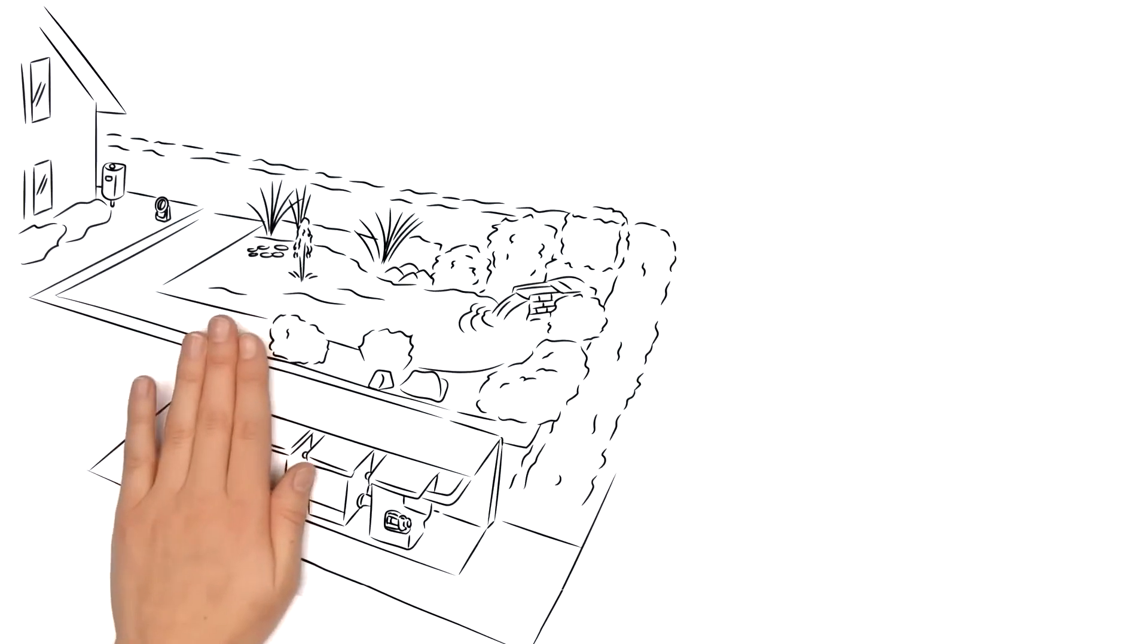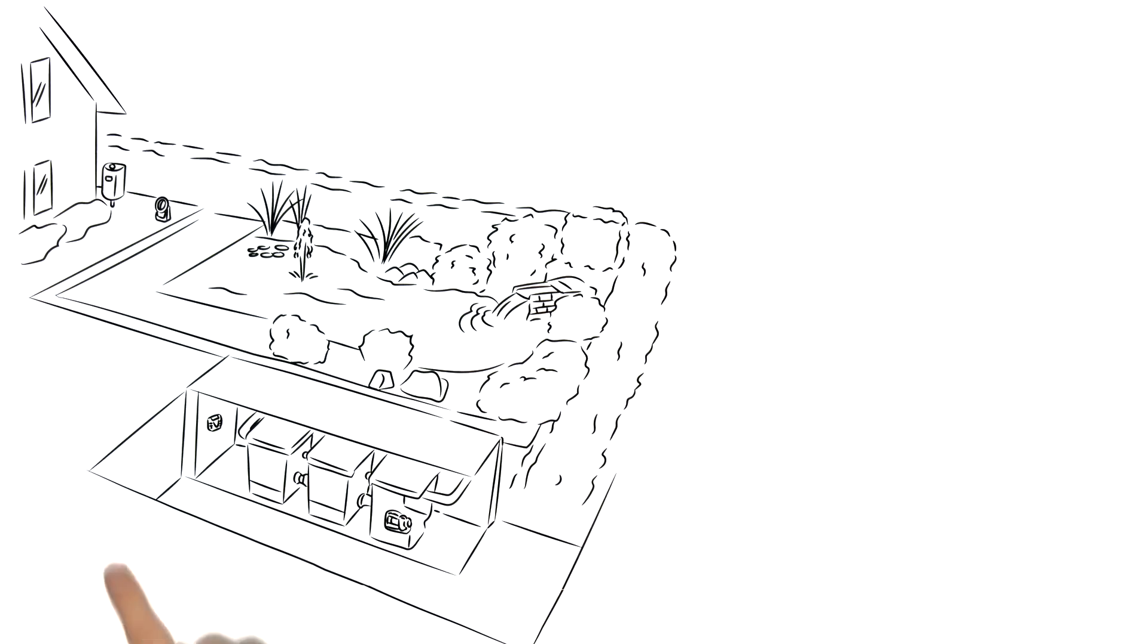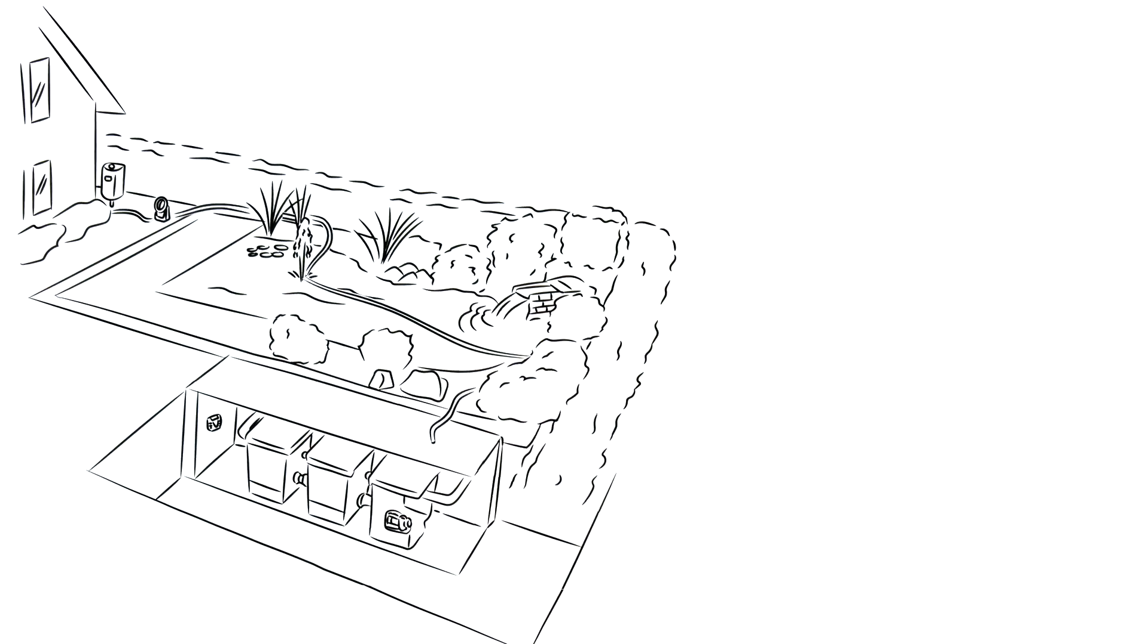Installation was dead easy. From the heart of the system, the FM Master Wi-Fi EGC, Matt only had to lay a cable from device to device, quickly connecting all pumps, filters, water features, and lighting together.